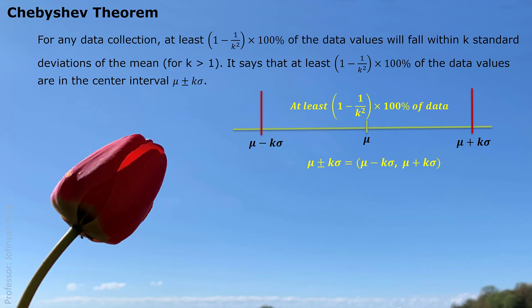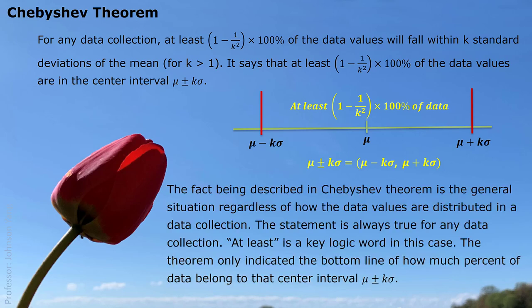The k standard deviation is described as an interval with the center average value mu, the left side mu minus k standard deviation — that is k sigma — and the right side which is mu plus k sigma. So the interval is described as mu plus or minus k sigma. The fact described by Chebyshev theorem is the general situation regardless of how the data values are distributed. The statement is always true for any situation. 'At least' in this statement is a key logic word. The theorem only indicates the bottom line of how much percent of the data belongs to that center interval.